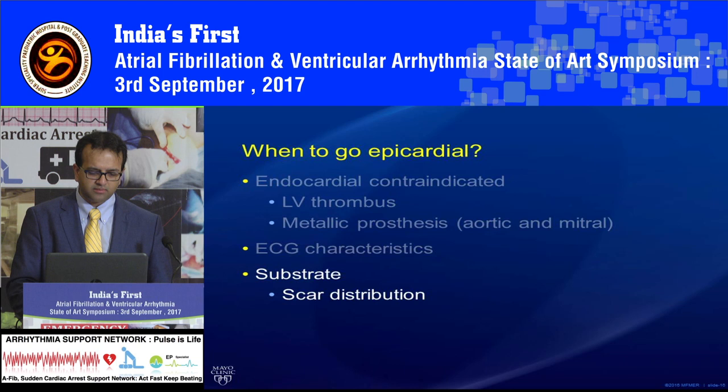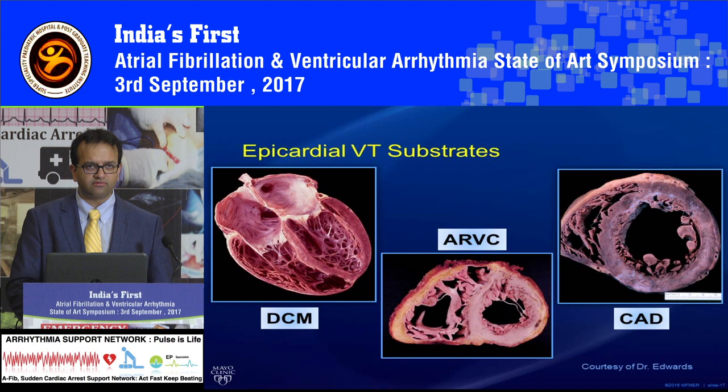Specific pathologies such as arrhythmogenic RV dysplasia, complete transmural infarct, and dilated cardiomyopathy are unique in that they have significantly more epicardial substrate compared to endocardial substrate. In those situations, if endocardial ablation has not worked, epicardial ablation can be pursued.